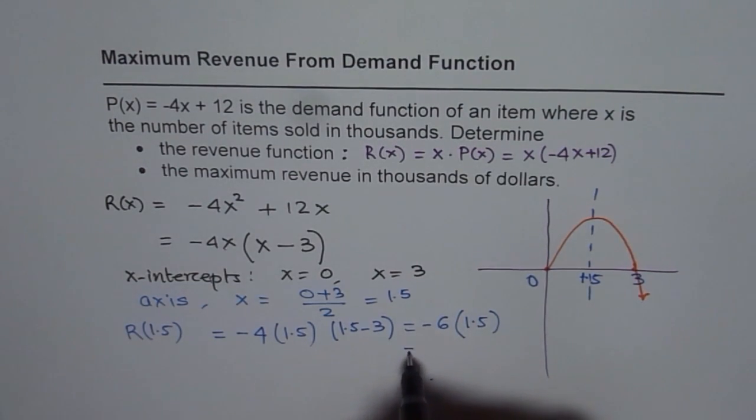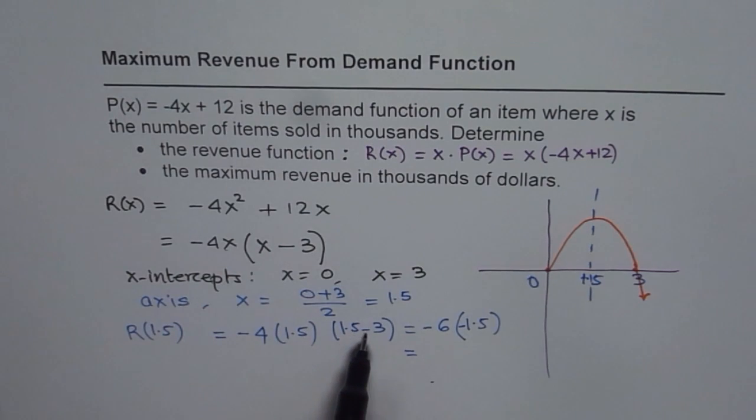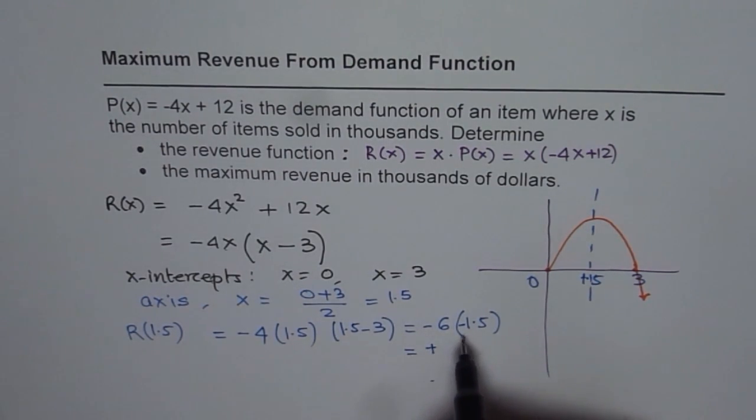Minus 6 times 1.5. So 1.5 times 6, which gives us a revenue of, this is -6, 1.5 minus 3. So that gives us +1.5 times will be 9, right? So 9. So it is $9,000 is the revenue.